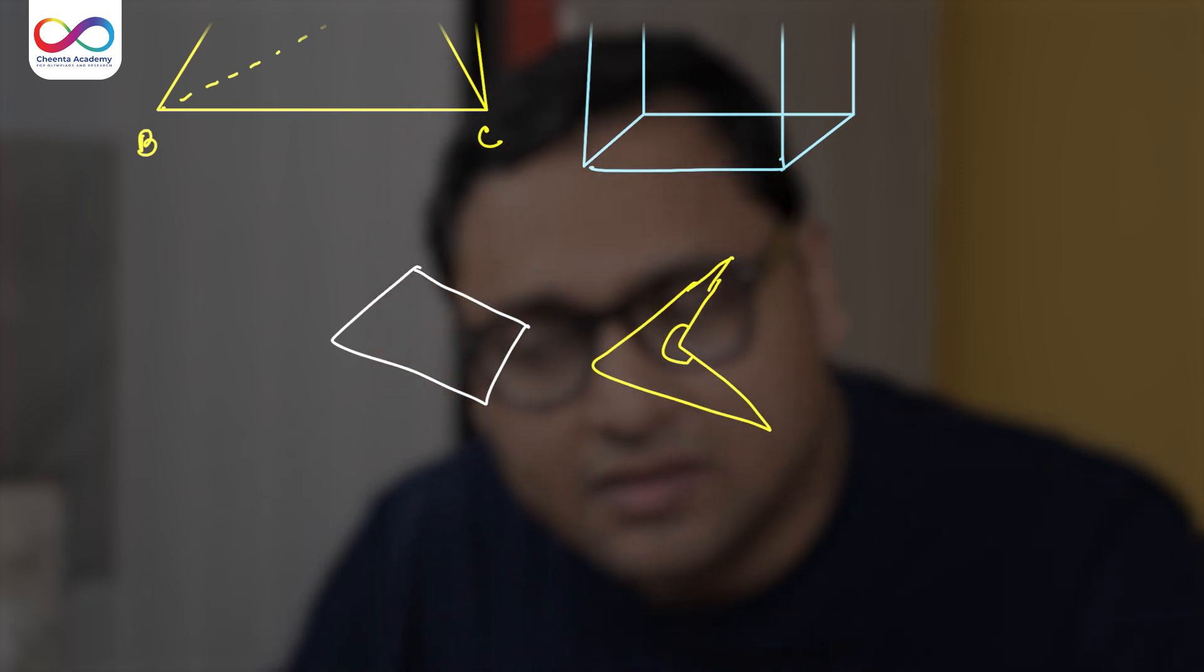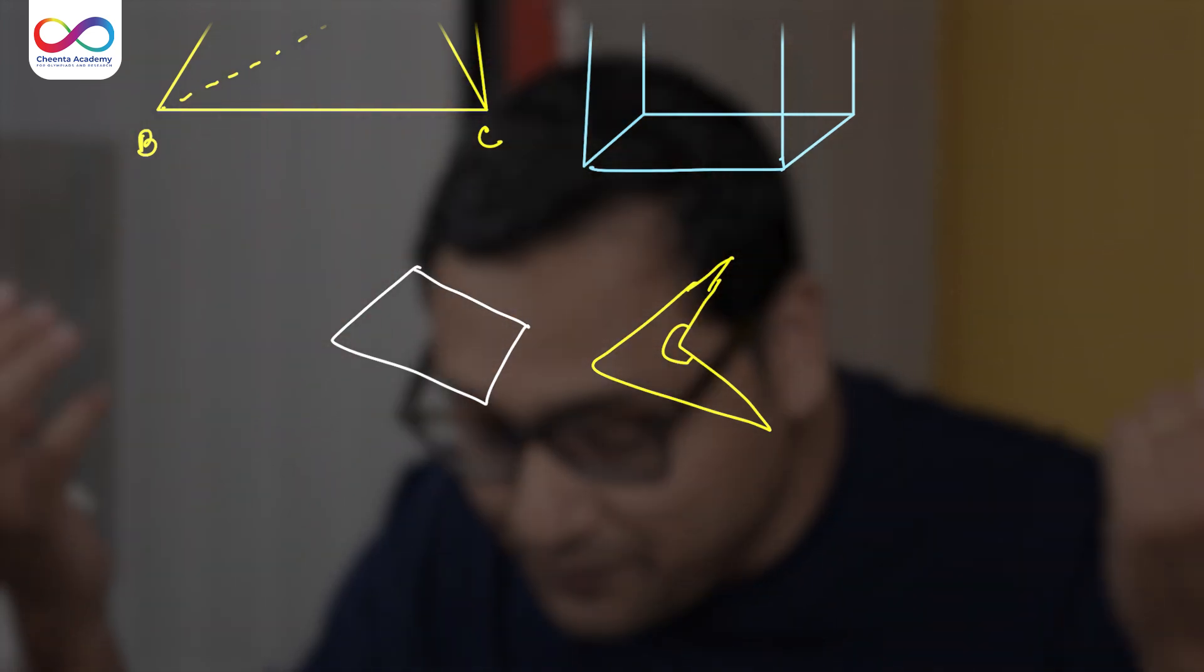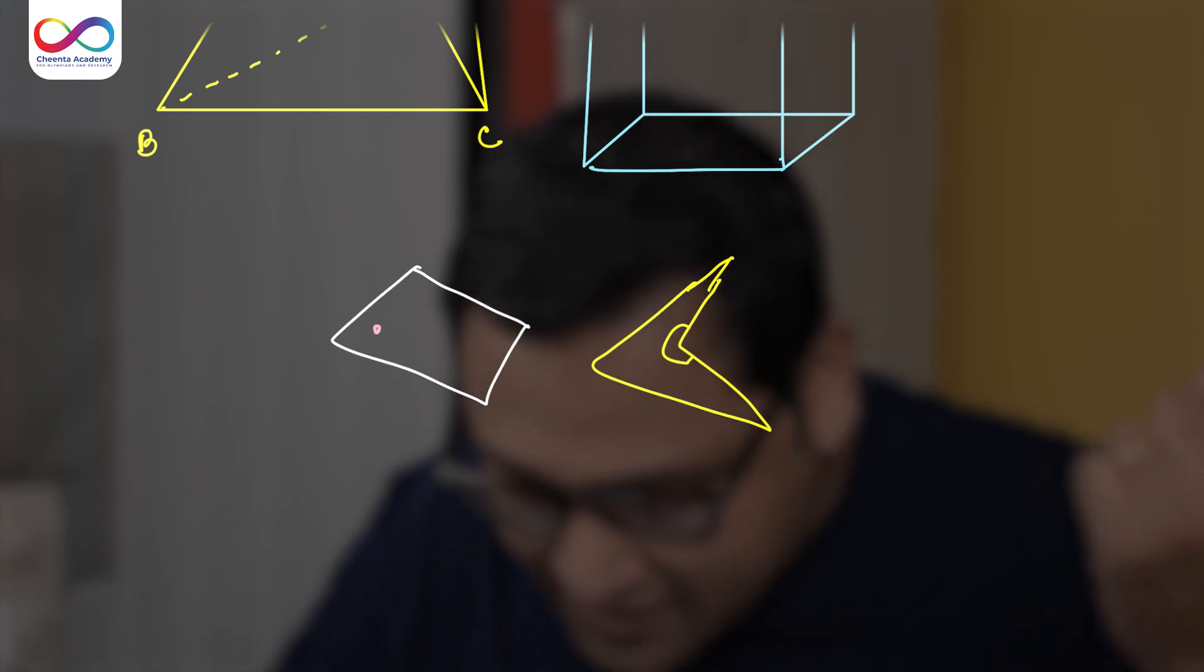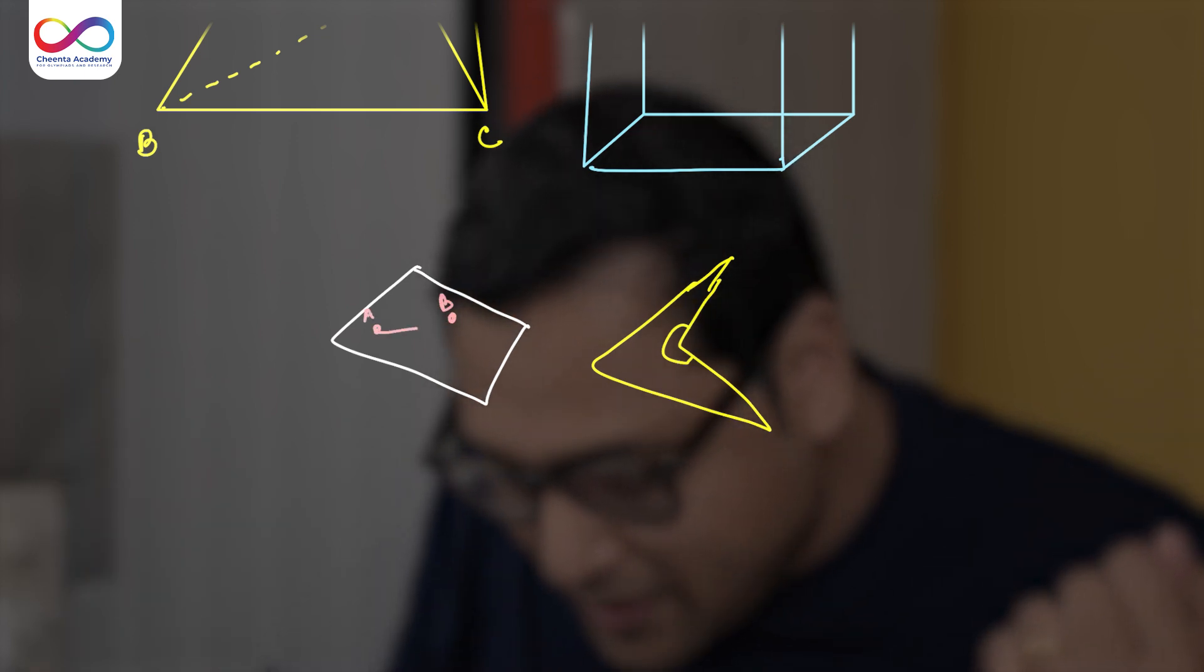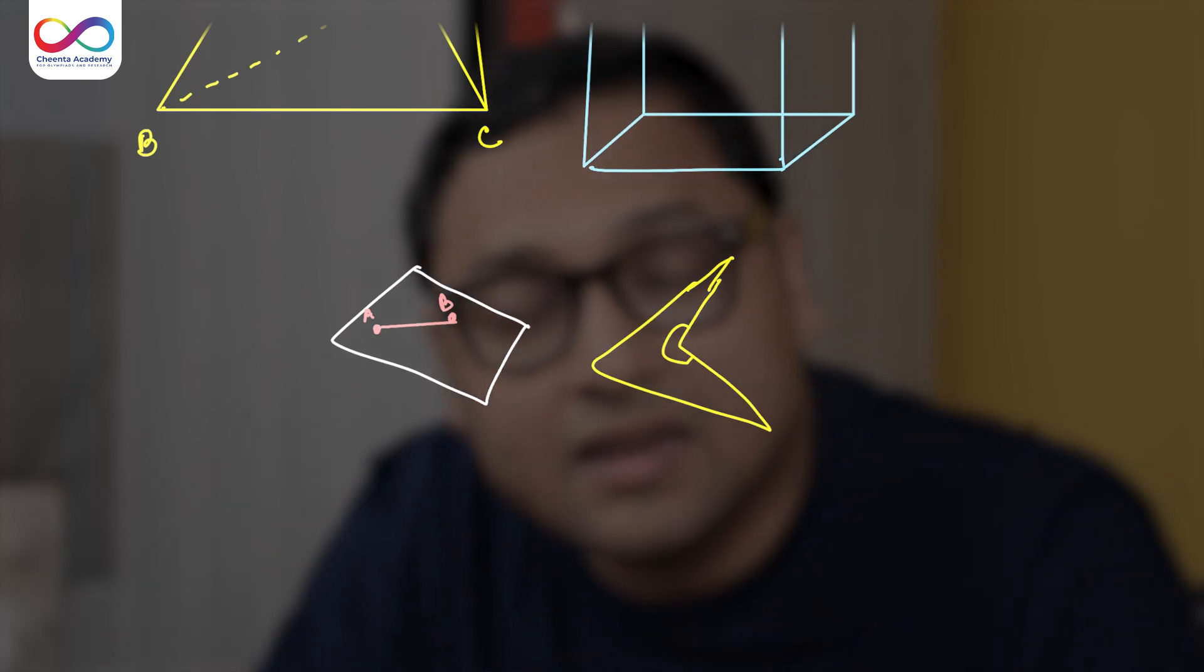So in a convex figure, it could be a two-dimensional figure. It could be a three-dimensional figure. Even an n-dimensional figure. What you do is you take any two points, let's say A, B, and if you join them by a straight line, the entirety of that straight line will be contained inside the figure.